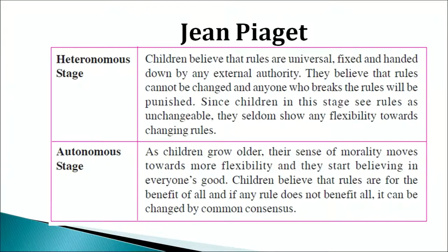The second stage according to Piaget is the autonomous stage of moral development. As the name suggests, children now develop autonomy. As children grow older, their sense of morality moves towards more flexibility and they start believing in everyone's good. They believe that if rules do not benefit others or themselves, they have no place — that is, they can be changed by common consensus. At the autonomous stage, children have the tendency to be flexible when it comes to rules and regulations of behavior.